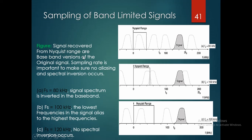If we observe these three diagrams: when Fs = 80 kHz, the signal spectrum is inverted in the baseband. When Fs = 100 kHz, the lowest frequency in the signal aliases to the highest frequency — this is called the aliasing effect. When Fs = 120 kHz, no spectral inversion occurs. In the first two conditions there is no spectral inversion, but in the 100 kHz case the lowest frequencies alias with the highest frequencies.